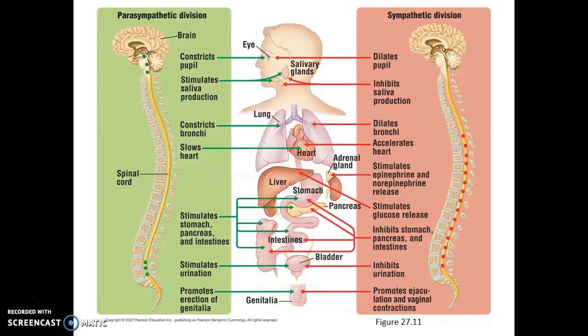So the central nervous system and the peripheral nervous system are the main divisions of the nervous system in vertebrates. In the next video we're going to look at the structures of the brain itself. See you in the next video!